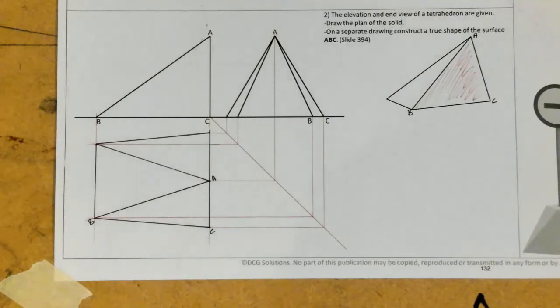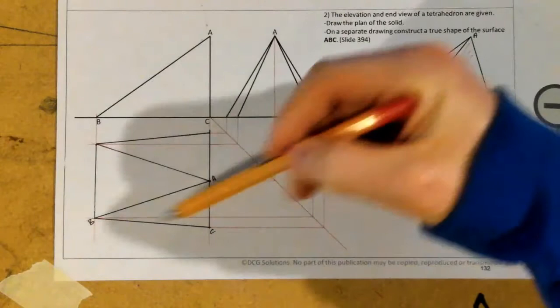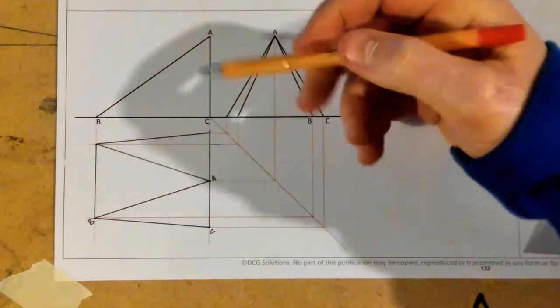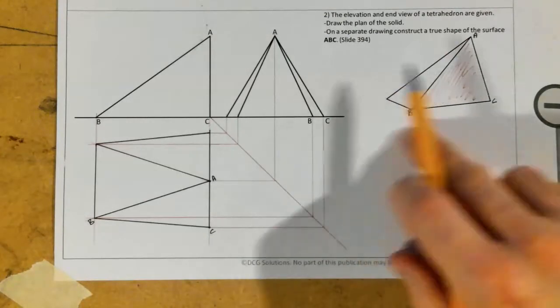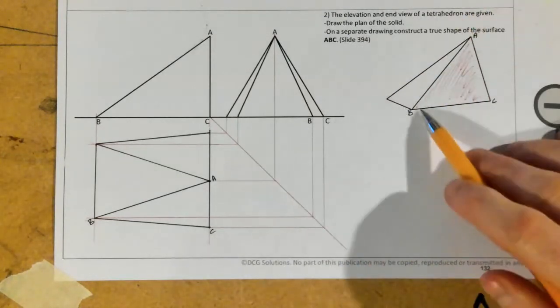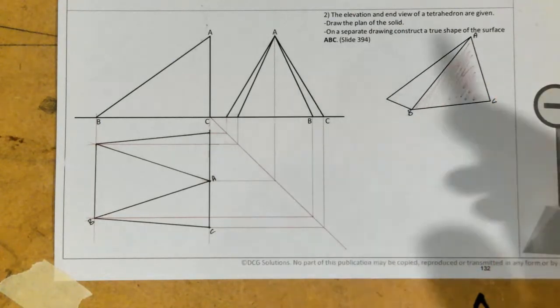As you can see, I have now constructed the plan of the object, and I've located my points A, B, and C on that. And what we have to do, as I said, in the second part is, on the second part of the sheet, which is going to be over here, I'm going to construct a true shape of the structure A, B, C. So we're going to see a triangle there.